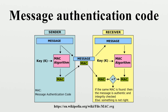In an example of a message authentication code algorithm, the sender of a message runs it through a MAC algorithm to produce a MAC data tag. The message and the MAC tag are then sent to the receiver. The receiver then compares the first MAC tag received in the transmission to the second generated MAC tag. If they are identical, the receiver can safely assume that the integrity of the message was not compromised, and the message was not altered or tampered with during transmission.